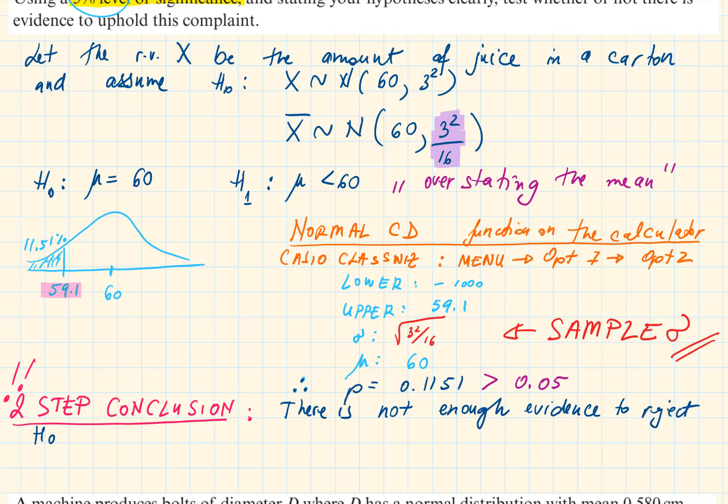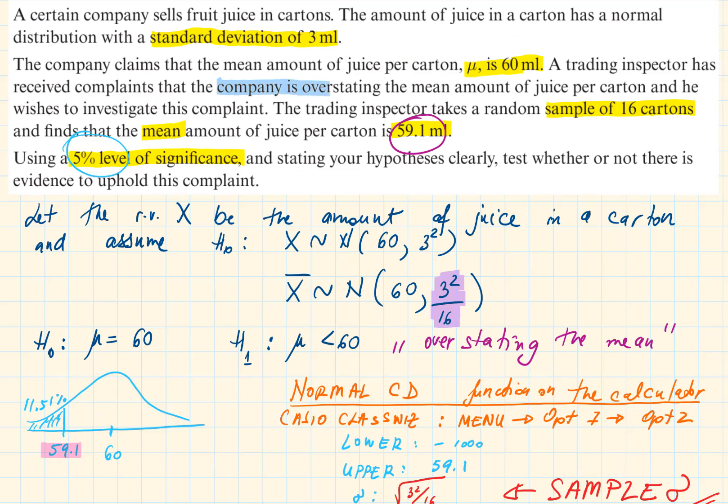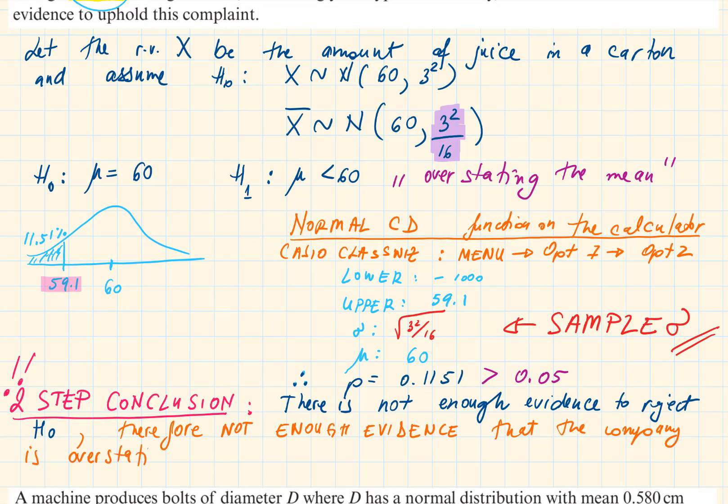And for step two, we need to put this in context. So, let's read the question again. The complaint was that they are overstating the mean amount of juice per carton. Now, we can just repeat the same words, but in front of it we write, there is not enough evidence. Therefore, not enough evidence that the company is overstating the mean amount of juice per carton.